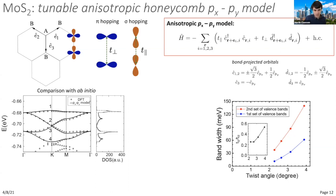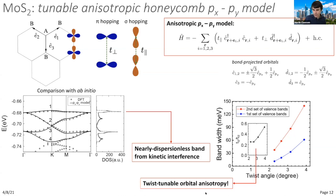This gives a route for two things: first, tuning the anisotropy; and second, the peculiarity of this px,py model in the anisotropic limit is the emergence of an almost perfectly dispersionless band—arising not from a magic angle condition but from kinetic interference very similar to a flat band in a Kagome or Lieb lattice. This manifests as a peak in the density of states, and we can expect prominent electron interaction effects upon doping into these bands.